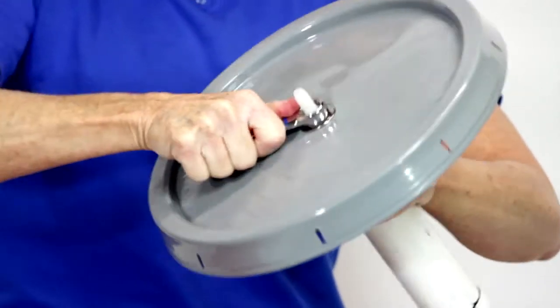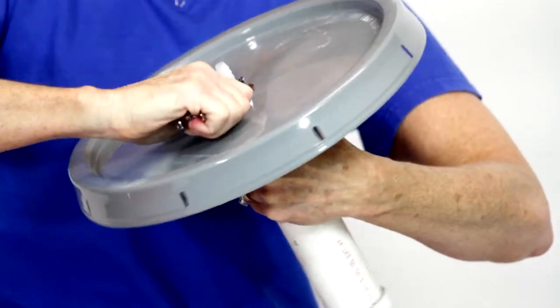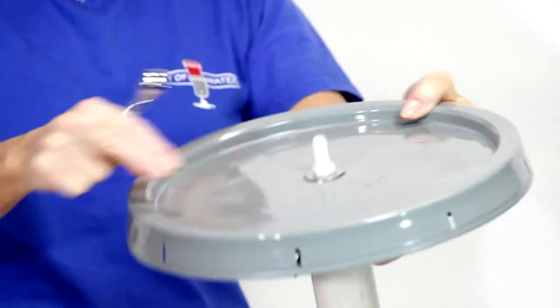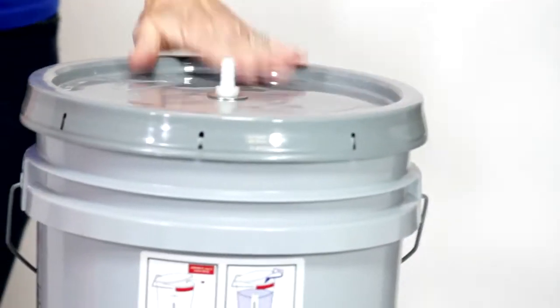The stainless steel washer distributes some of the weight of the red bucket when it sits on top. It helps prevent the cracking of the gray lid.